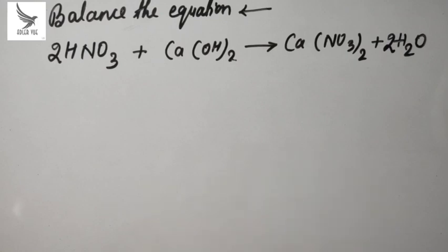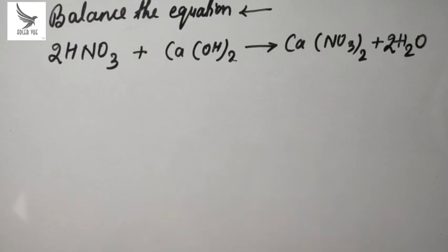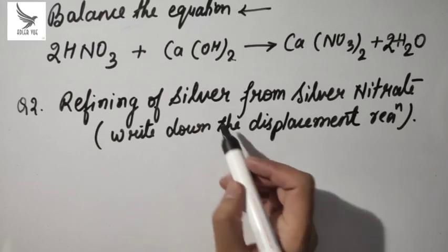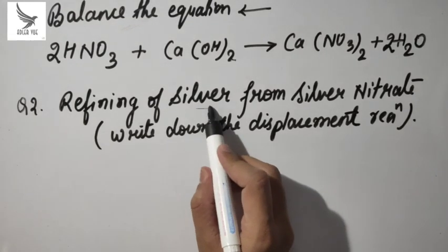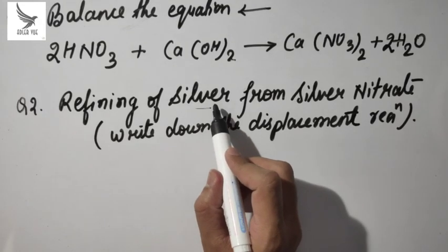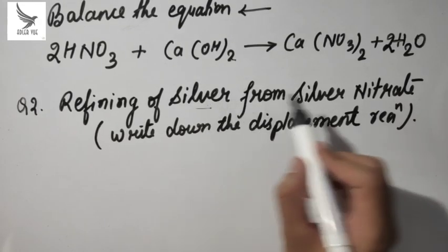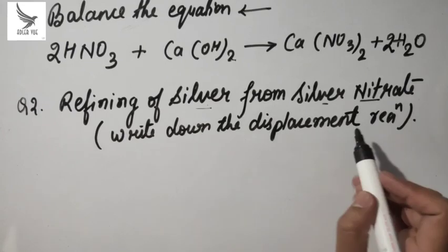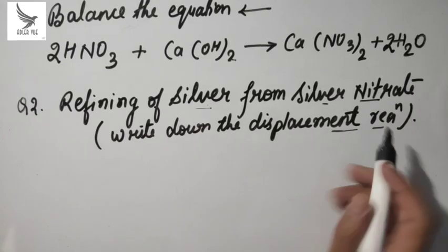So that was the first question. Now let's see the second question. The second problem involves refining — that means separation — of silver from silver nitrate, which is a displacement reaction.